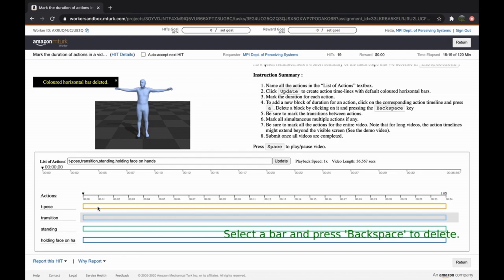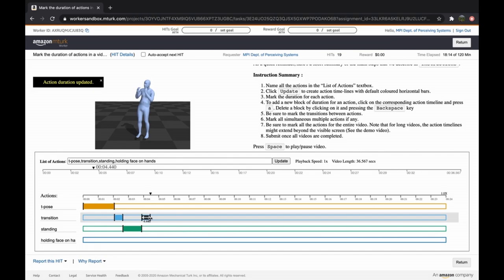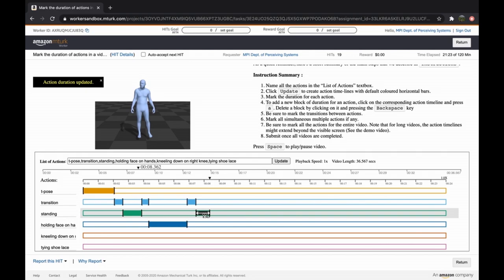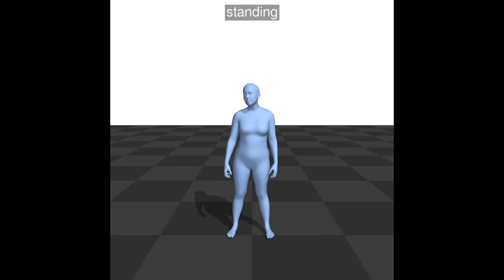To label these actions, we recruit annotators from Amazon Mechanical Turk. They first watch the video, enter all the actions in the movement and then align the span of the action label with the duration of the action in the video. We ensure that every frame of the sequence is annotated.